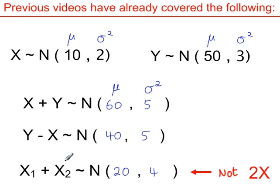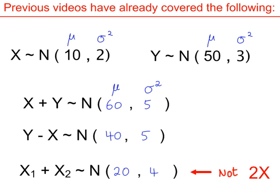This variable x1 plus x2 is not the same as 2x, where x is multiplied by 2. To give this a context, assume x represents the weight of a packet of crisps. x1 plus x2 is the total weight of two different packets of crisps. However, 2x is just one packet of crisps but its weight is doubled. So these are two different items, but 2x is one item which is doubled.